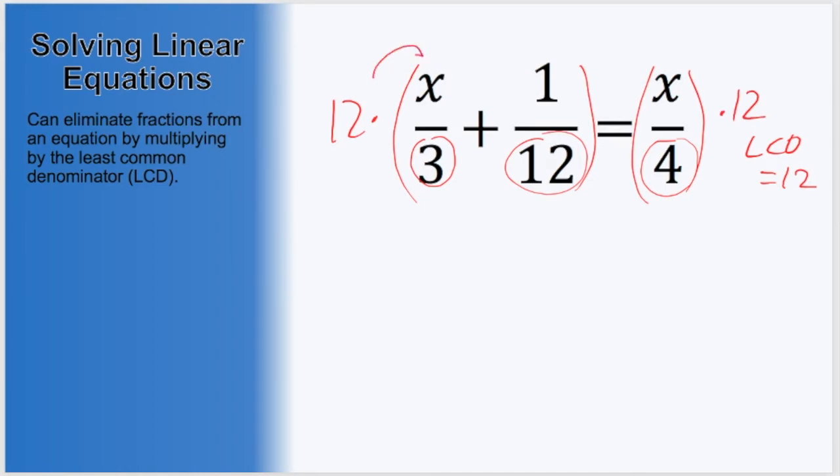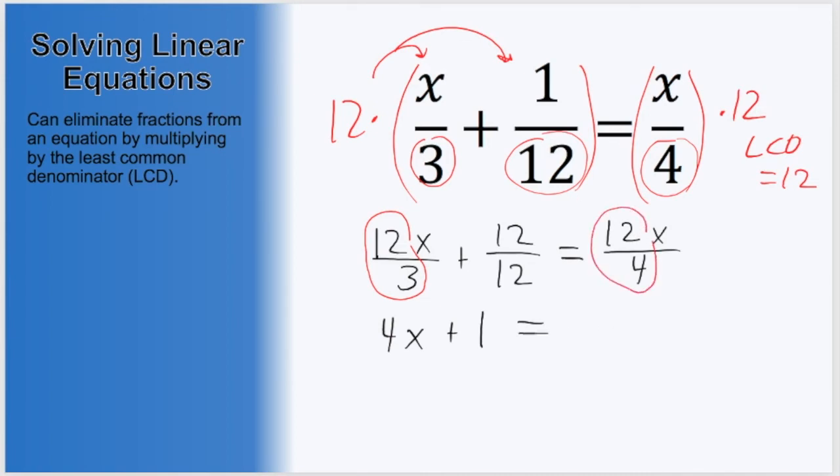On the left, the 12 must distribute into both of these terms. So we will be getting 12 times x over 3 plus 12 over 12. And that's going to be equal to 12 times the right side will be 12 times x over 4. Simplifying these, in this first one we can do 12 over 3 which will just leave us with 4 still times x plus 12 over 12 is just going to be 1 equals we have 12 divided by 4 which will be 3 still multiplied by that x. And look, we don't have any fractions anymore, making dealing with these numbers a lot easier for us.